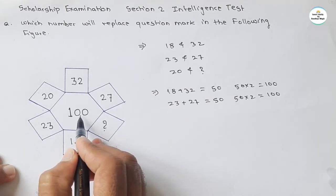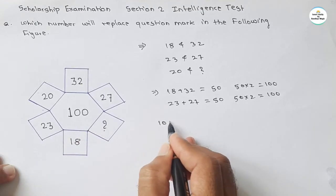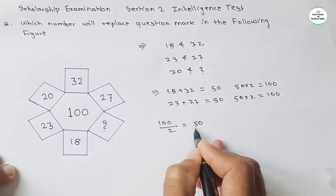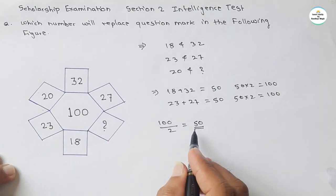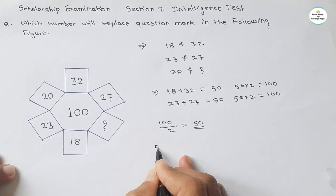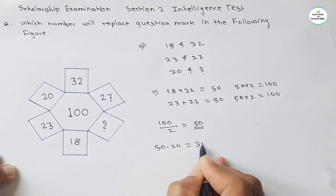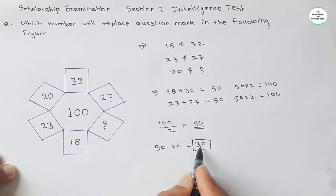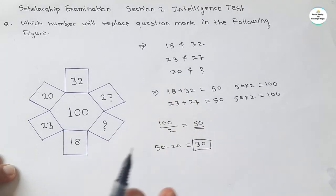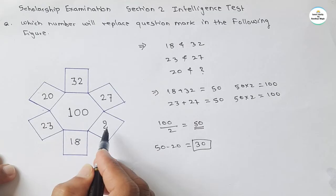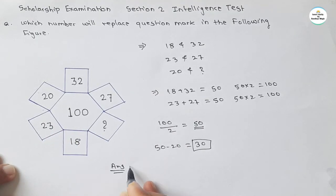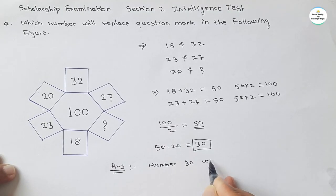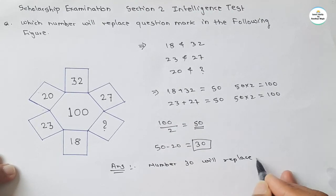We have the central number 100. Dividing 100 by 2 gives 50, and this 50 must be the sum of the two opposite numbers. Our first number is 20, so 50 minus 20 equals 30. If we add 20 and 30 we get 50, and 50 × 2 = 100. So by this relation, the answer is 30. Number 30 will replace the question mark.